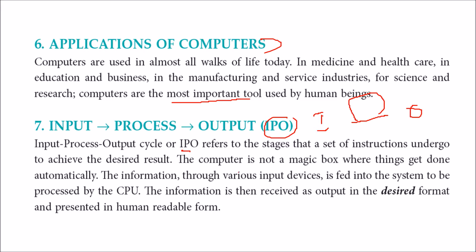As stated in the book, a computer is not a magic box. Nothing is done automatically — you have to feed certain things and give the instructions. Those things are then automated, and they can be done again and again, over and over, without error. The result can be represented in human-readable form.